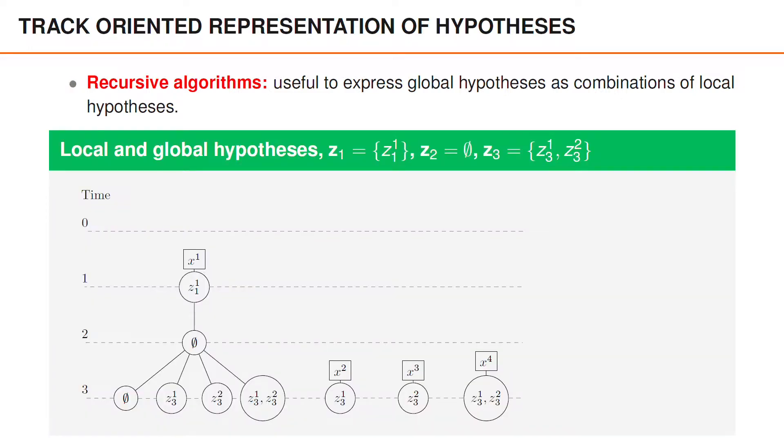As an example, suppose we have one measurement at time 1, zero measurements at time 2, and two measurements at time 3. In that case, there are four potential objects in total, even though they cannot all coexist, and the total set of local hypotheses is illustrated in the figure.